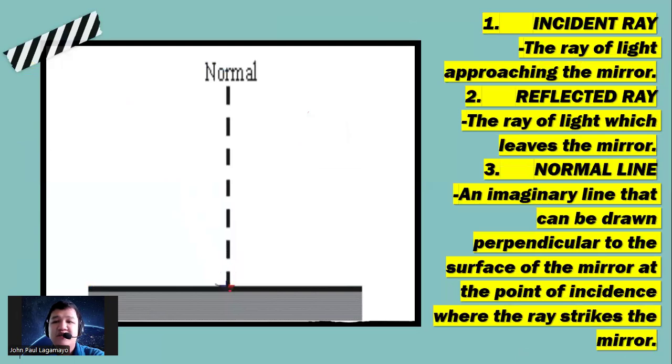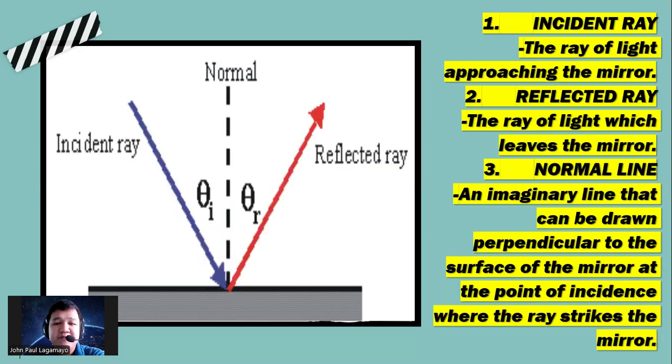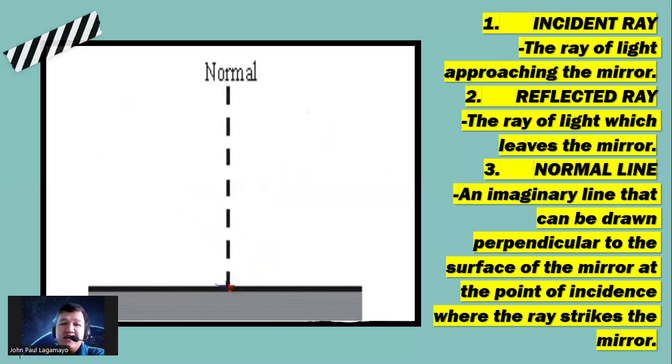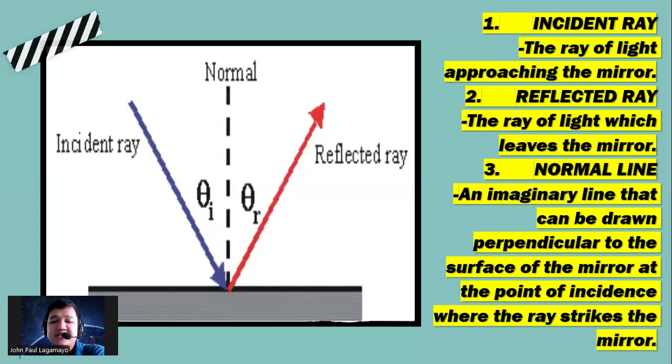Now some of the few terms that you have to memorize in terms of the concepts of reflection. When we speak about the incident ray, we call that as the ray of light approaching the mirror. And once we speak about the reflected ray, this is the ray of light which leaves the mirror. The distance in between the incident ray and the reflected ray is what you call as the normal line. So this is an imaginary line that can be drawn perpendicular to the surface of the mirror at the point of incidence where the ray strikes the mirror.